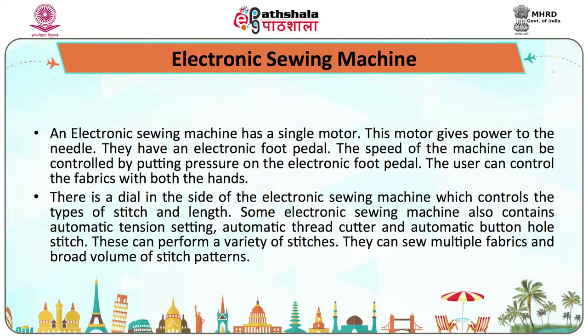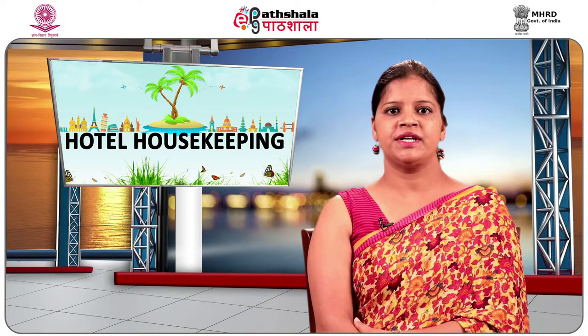Electronic sewing machines have a single motor that gives power to the needle. They have an electronic foot pedal, and the speed can be controlled by putting pressure on it. The user can control the fabric with both hands. There is a dial on the side which controls the type of stitch and length. Some electronic sewing machines also have automatic tension setting, automatic thread cutter, and automatic buttonhole stitch. They can sew multiple fabrics and a broad variety of stitch patterns.